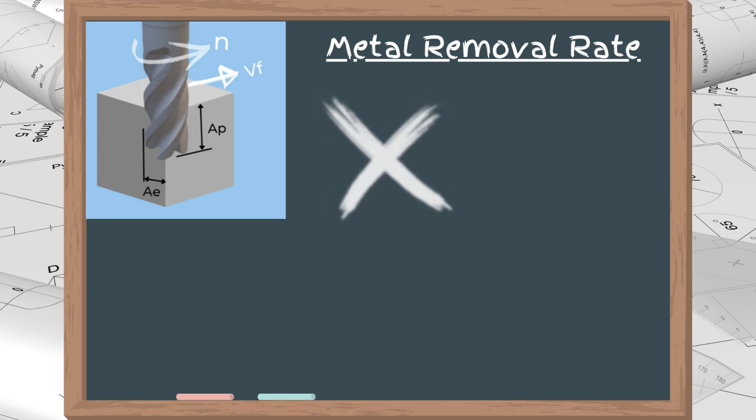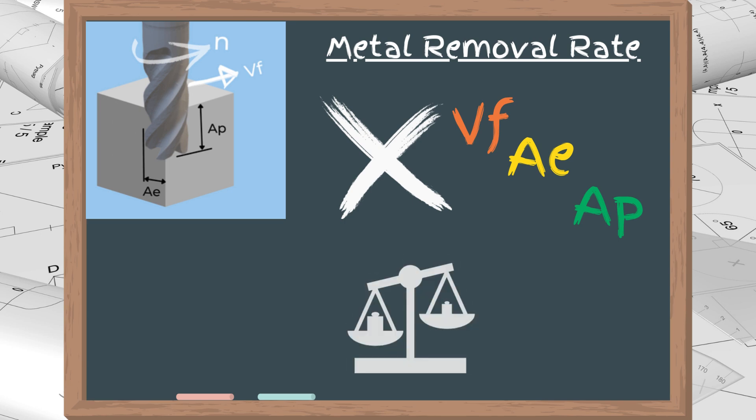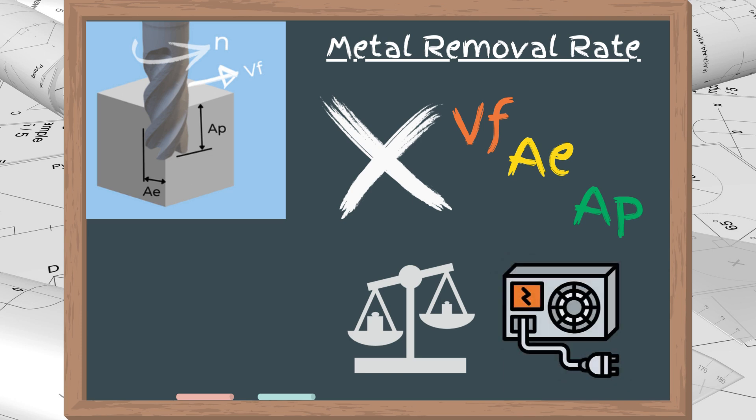It equals the product of the table feed, radial depth, and axial depth. It is used for two purposes: comparing the productivity between two scenarios, and for calculating the required machining power.